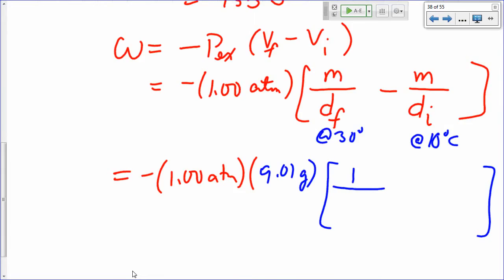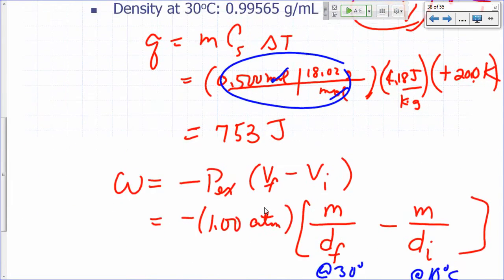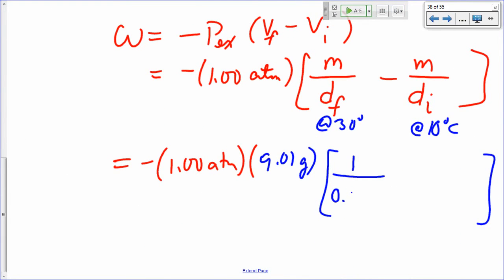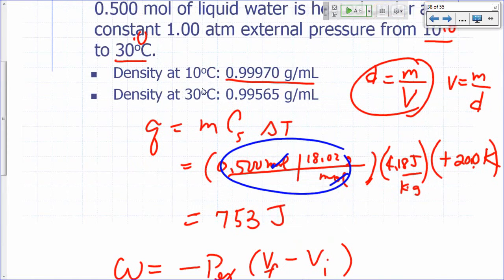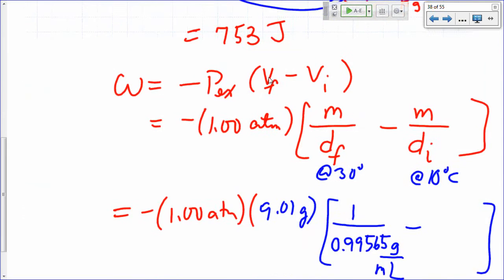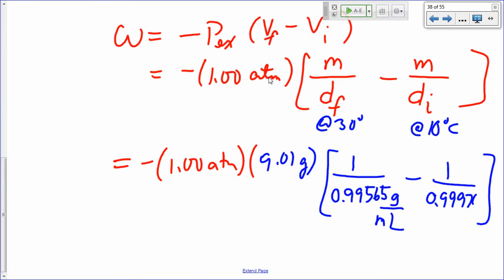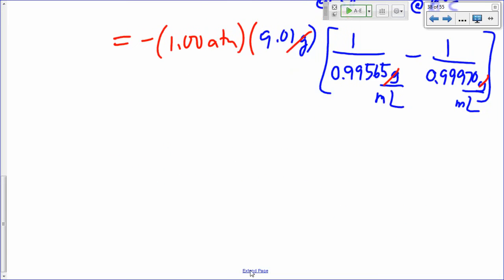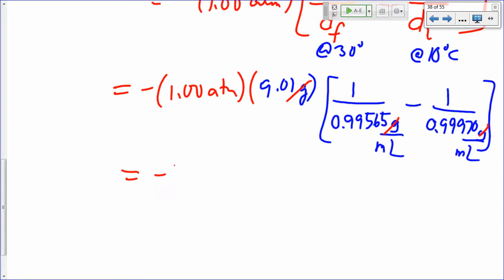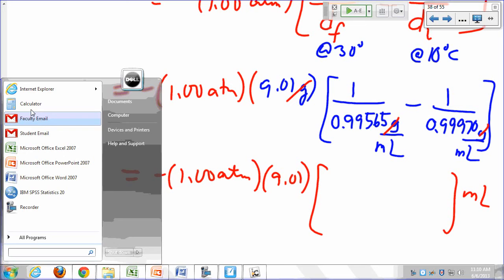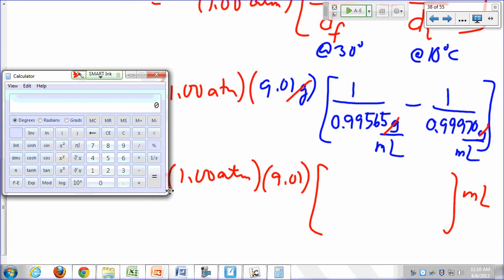One over... What's our density at 30 degrees? 0.99565 grams per mL. What's the density at 10 degrees? 0.99970 grams per mL. So grams are going to cancel out, and so you have your answer in mLs there. What would this be? Minus 1.00 atmospheres times 9.01 times this whole thing in mLs. That's 1 over 0.99565 minus 1 over 0.99970.